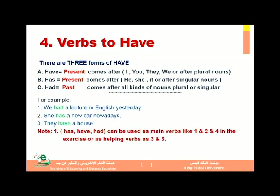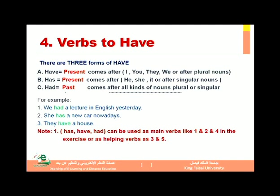So, verbs of 'have'. Have has three characters, as we have already explained before, but today we will talk about it in detail. Have, has, and had. Have is used in the present tense — نستخدم 'have' بعد الضمائر التالية: I, you, they, we, or after a plural noun. فإذاً 'have' تأتي بعد الضمائر التالية أو بعد أي كلمة جمع لما يكون زمن الجملة مضارع.